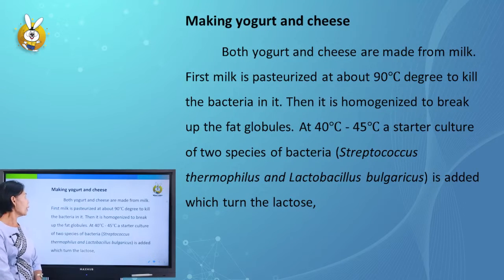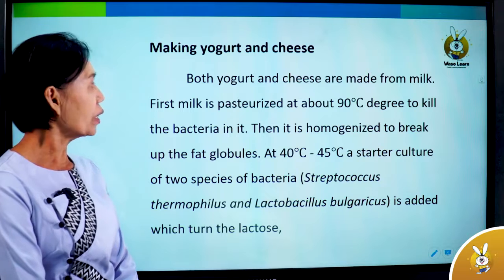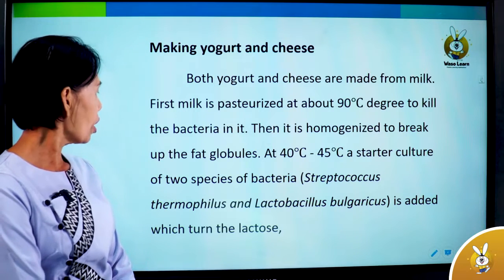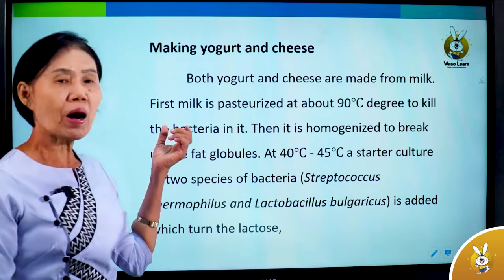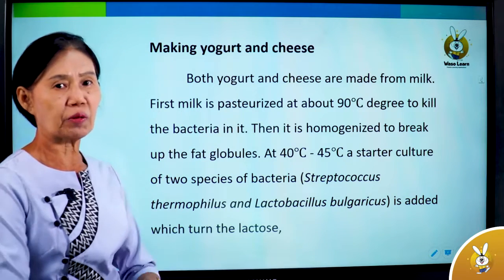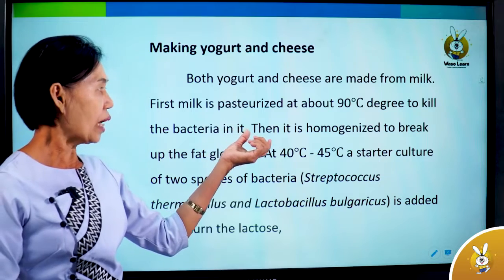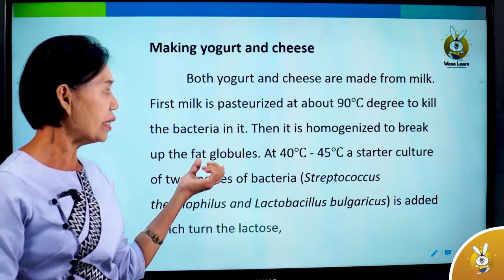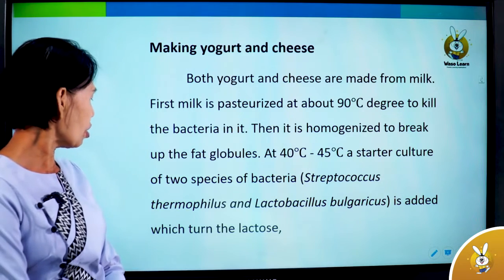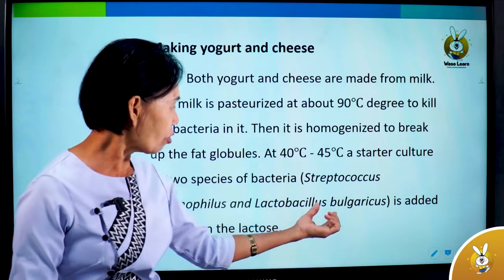The making of yogurt and cheese starts with milk. Fresh milk is pasteurized at about 90 degrees Celsius to kill bacteria in it. Then it is homogenized to break up the fat globules, and cooled to 40 to 45 degrees Celsius.